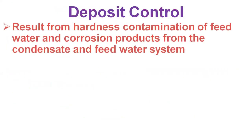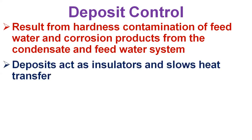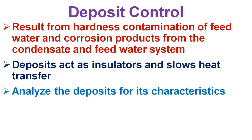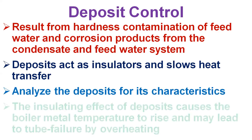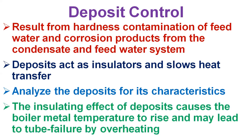Deposits in boilers may result from hardness contamination of feed water and corrosion products from the condensate and feed water system. Hardness contamination may arise due to a deficient softener system. Deposits and corrosion result in efficiency losses and may lead to boiler tube failures. Deposits act as insulators and slow heat transfer. Large amounts of deposits could reduce heat transfer enough to reduce boiler efficiency significantly. Different types of deposits affect efficiency differently, so it may be useful to analyze deposits for their characteristics.